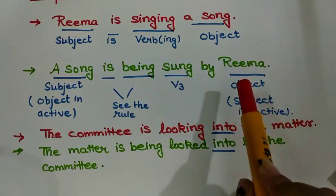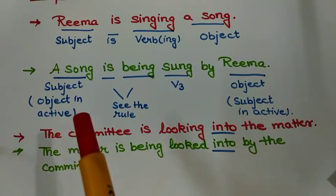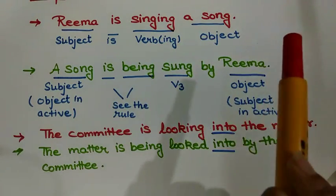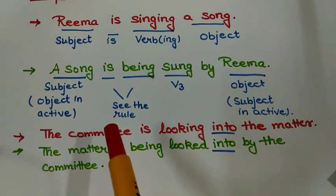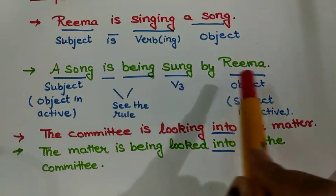Rima is object here, which was a subject. So if in active voice the sentence is 'Rima is singing a song', in passive it will become 'A song is being sung by Rima'.